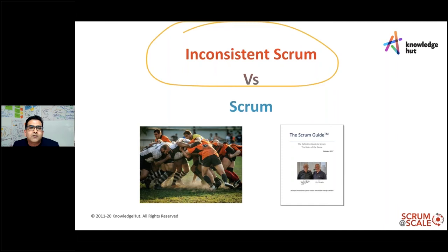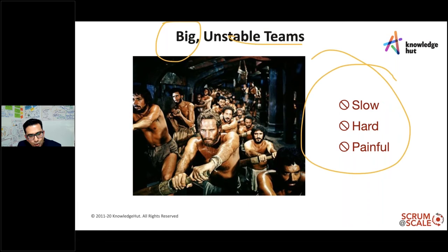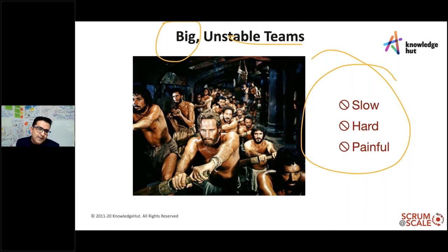When teams weren't performing, organizations started increasing the number of developers or testers thinking it would improve delivery — but that creates unstable teams, slows things down, and is painful. Teams stopped thinking about continuous improvement. Nothing was getting done in the sprint, and it became a mini-waterfall within Scrum — doing only a few practices like stand-ups and marathon sprint planning over two or three days, with a backlog that wasn't well defined, prioritized, or designed.